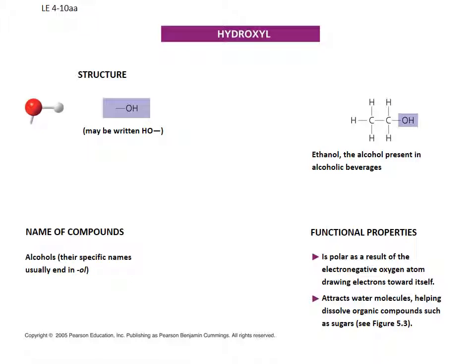Now let's review our different functional groups. You need to know the name, what it looks like, and its properties. The first one is the hydroxyl group — that's the HO or OH group. The red ball is the oxygen and the white is hydrogen. If we look at ethanol, we see the OH group on the right-hand side of that molecule. The OH group gives a molecule the name of an alcohol — 'ol' is the ending. Ethanol is the alcohol present in beer, wine, and whiskey. This group makes a molecule polar, meaning it is soluble in water and attracts water molecules.